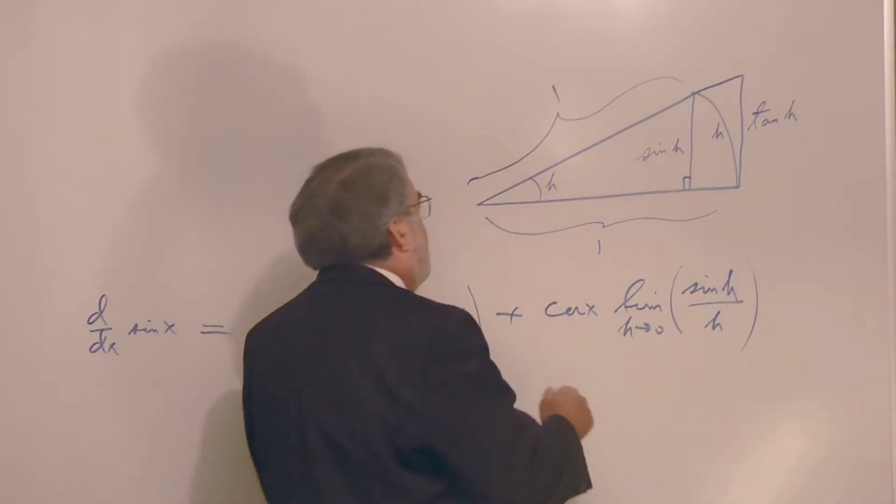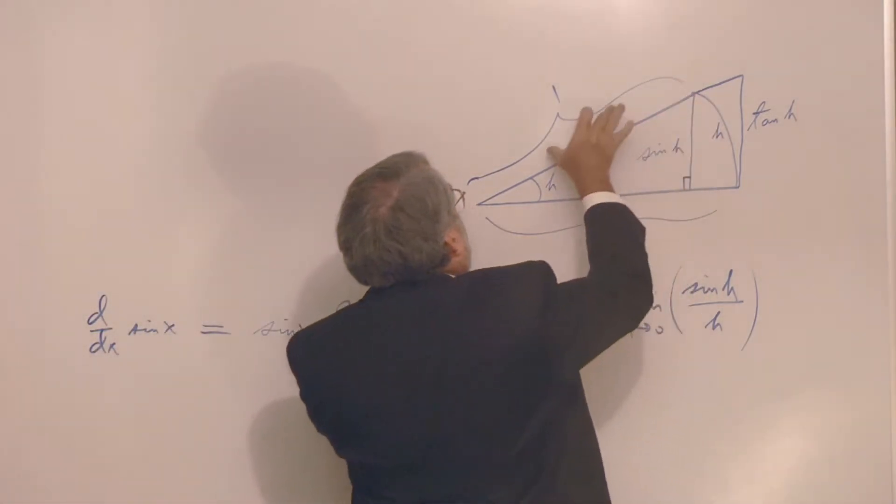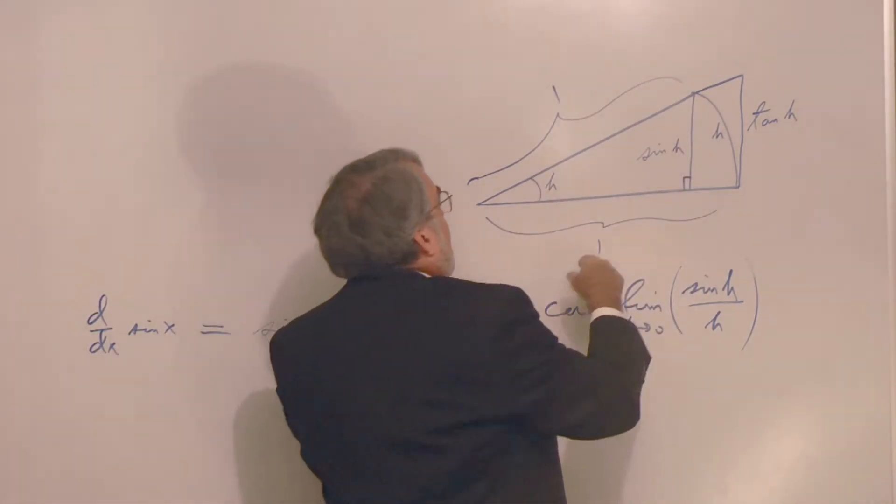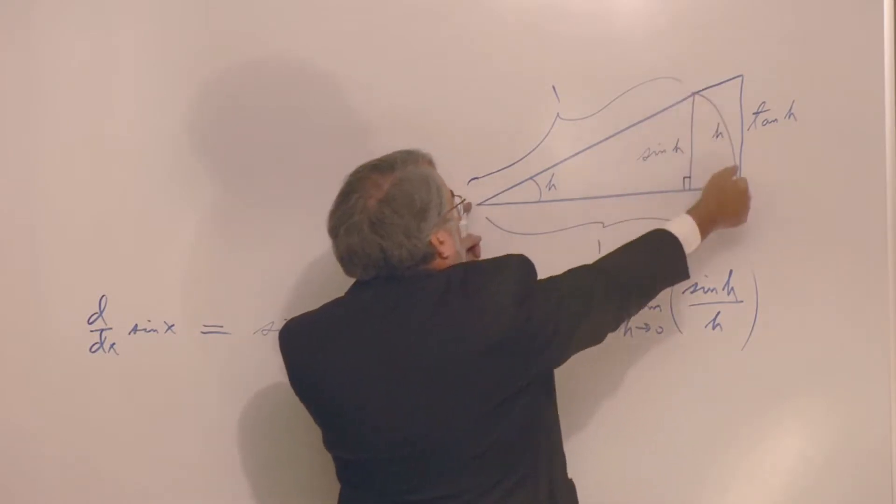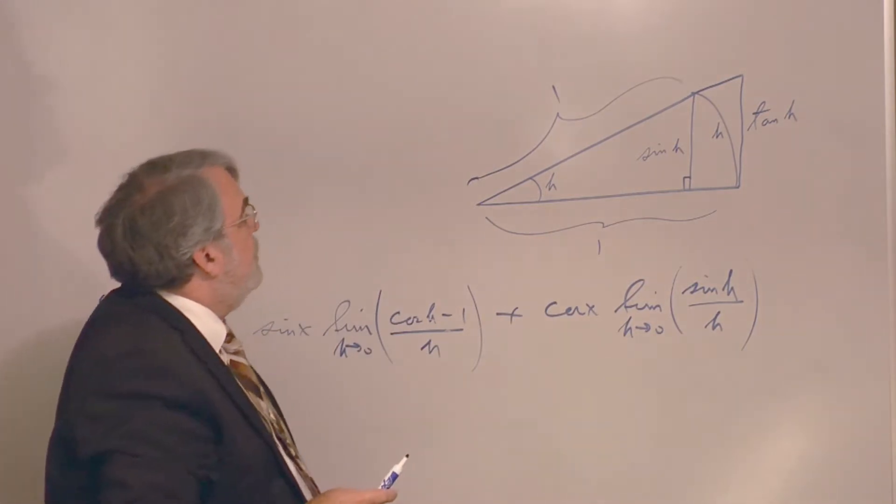Now then, you might recall from, well, first of all, this triangle, this small one has a hypotenuse of one. And when I swing it down here as part of a circle that makes the base of the larger triangle one also.